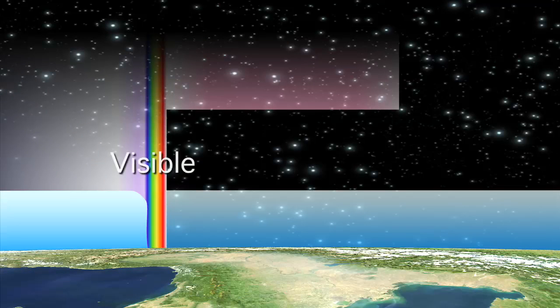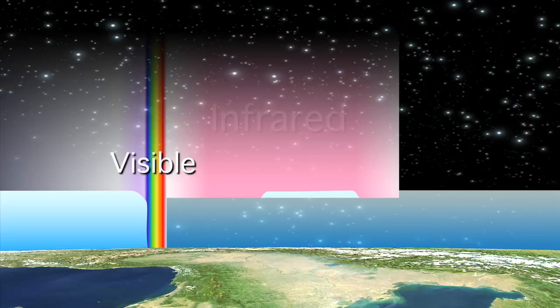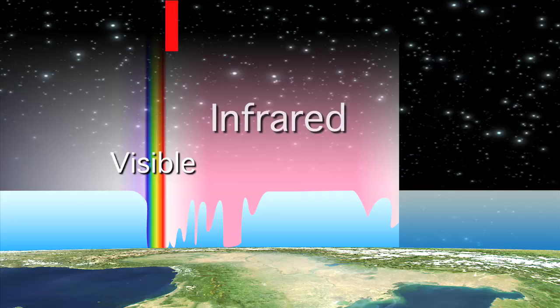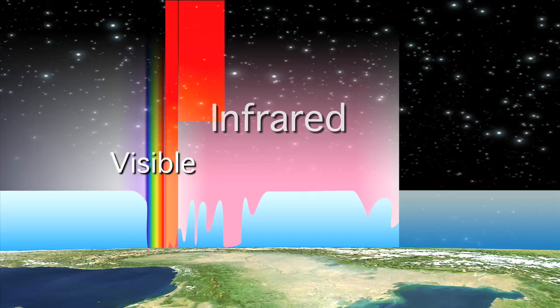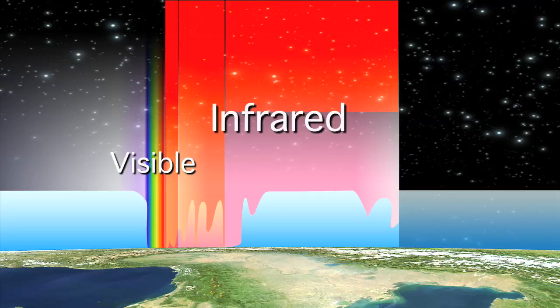The infrared portion of the electromagnetic spectrum can be divided into three regions: near, mid and far infrared. As a celestial object cools, it will emit most of its radiation at progressively longer wavelengths, and therefore further into the infrared.